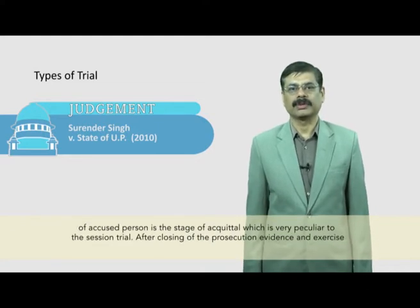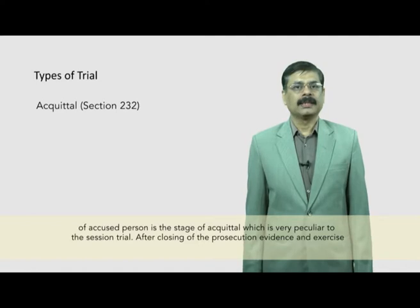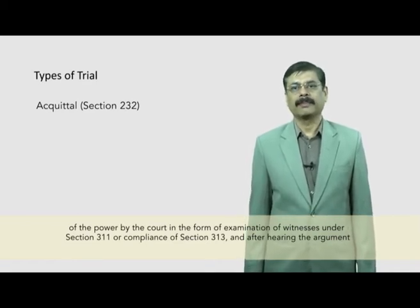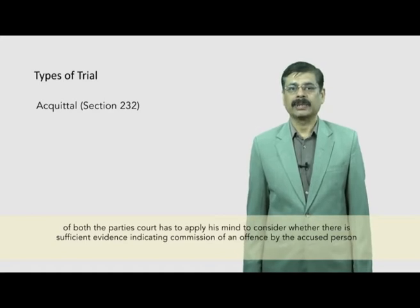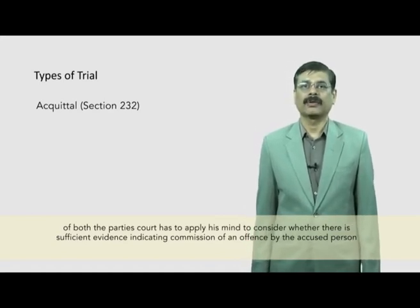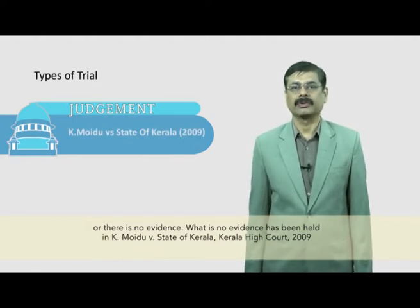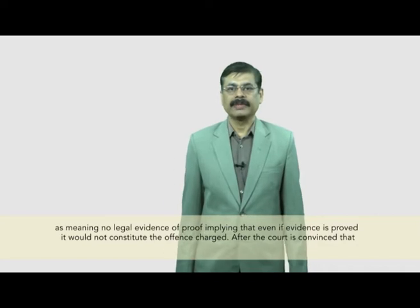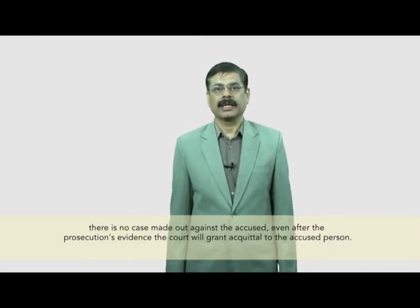The next stage after examination of the accused is the stage of acquittal, which is very peculiar to the session trial. After closing of prosecution evidence, exercise of power under section 311, compliance of section 313, and after hearing argument of both parties, the court has to apply its mind to consider whether there is sufficient evidence indicating commission of an offense by the accused. 'No evidence' has been held in K. Moidu versus State of Kerala, Kerala High Court 2009, as meaning no legal evidence of proof, implying that even if evidence is produced, it would not constitute the offense charged. After the court is convinced that no case is made out, even after prosecution's evidence, the court will grant acquittal to the accused person.